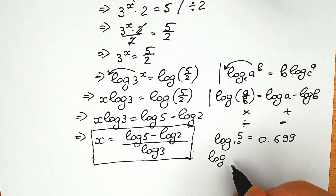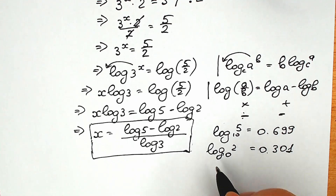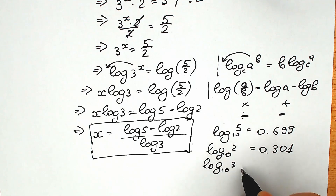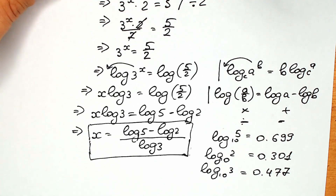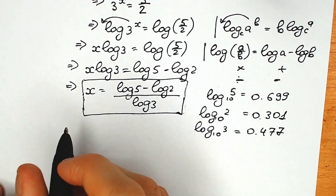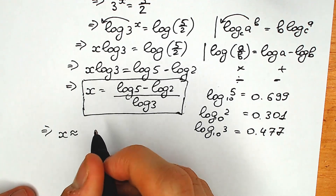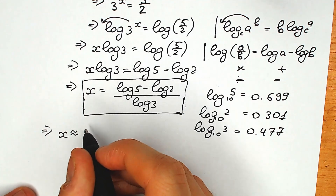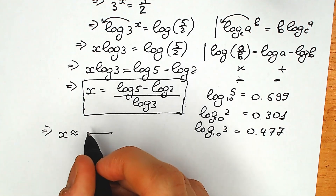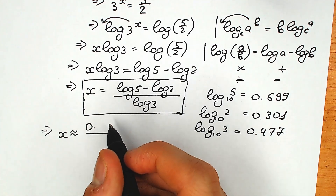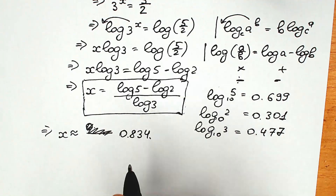You know that log 2, base 10, equals 0.301, and log 3, base 10, equals 0.477. When you know these values, or if you're allowed to use a calculator on your exam, you can easily find the approximate answer. So x is approximately equal to (0.699 minus 0.301) divided by 0.477, which gives us 0.834.